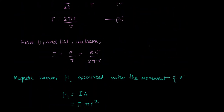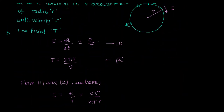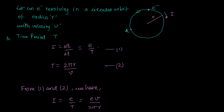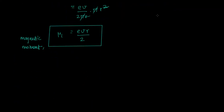The direction of the magnetic moment: since the current flows in that direction, the magnetic moment is directed into the screen — perpendicular to the plane of the orbit, pointing inward.